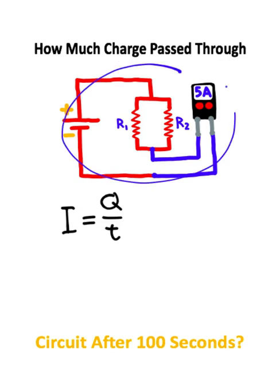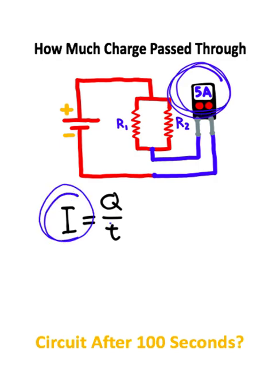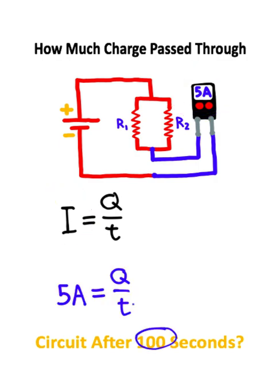So if we want to calculate how much charge passed through this circuit after 100 seconds, what I can do is I can take this 5 amps and plug it in for the current. I can then take 100 seconds and plug it in for my time.